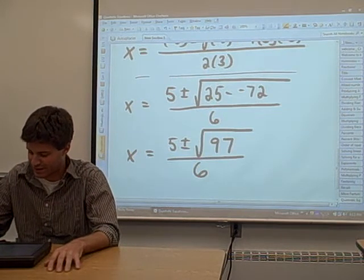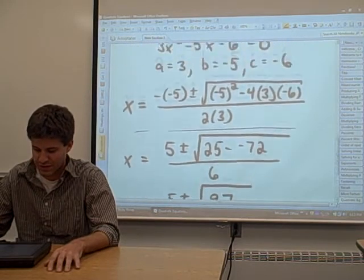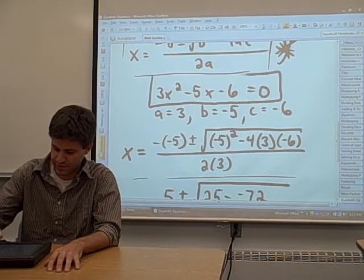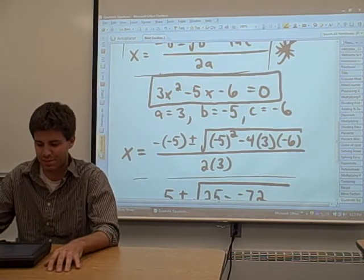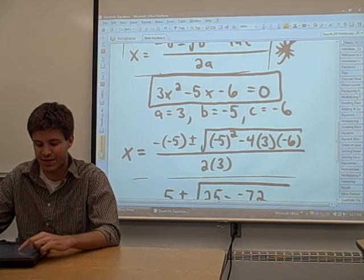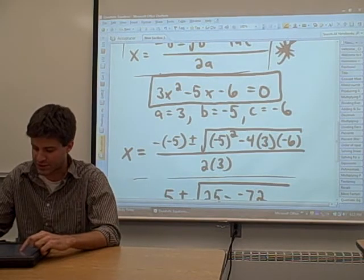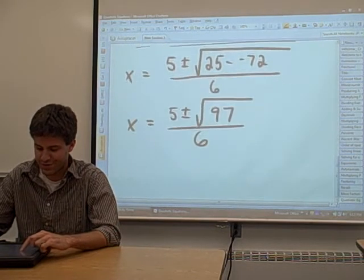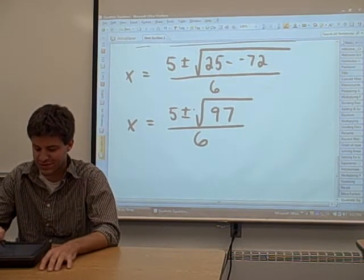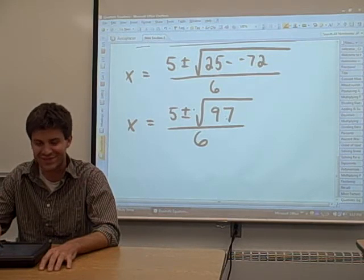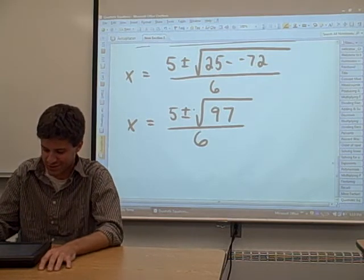Here's what it means. If you have the equation 3x squared minus 5x minus 6, the x values that you can plug into that equation that satisfy that equation are 5 plus the square root of 97 divided by 6, and 5 minus the square root of 97 divided by 6.